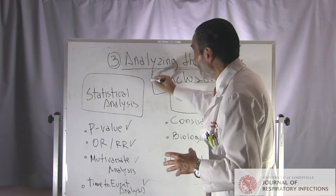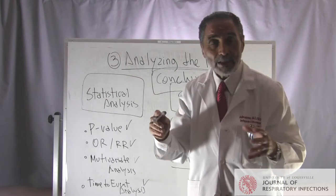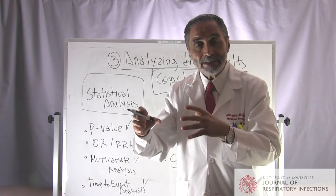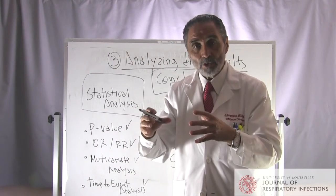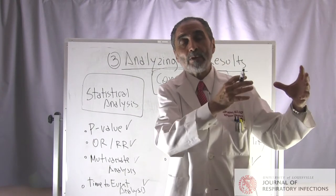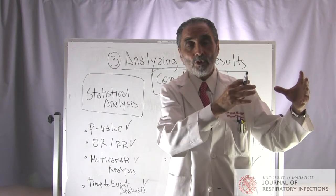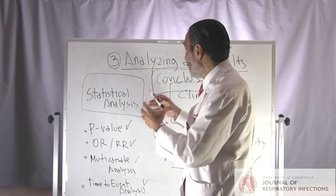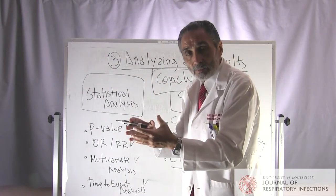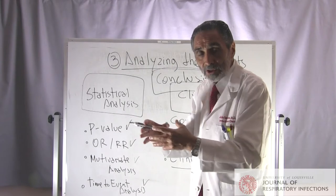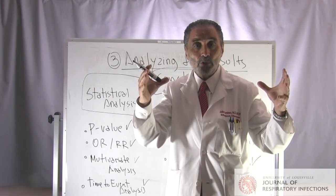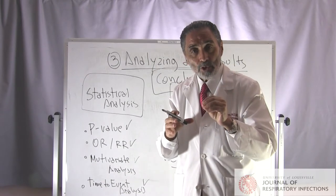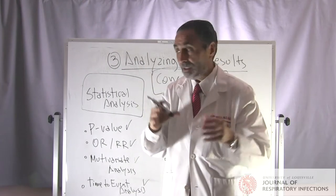We also do clinical analysis — looking at how consistent the results are with the literature, whether the findings follow what is already known, and what the biological plausibility is. Can we make sense of the results? Do we have a pathophysiology that explains them? A result may be statistically significant with a very low p-value, but the clinical importance is also critical — ultimately, how are these findings going to improve the outcomes of patients in the universe?